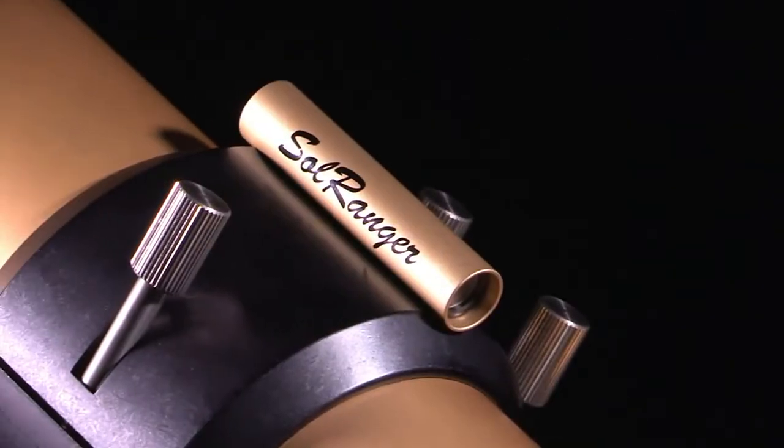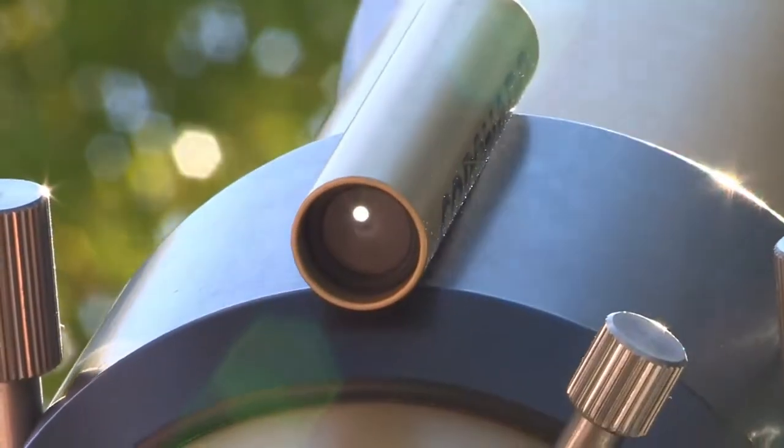The SolarMax II has the included Coronado Soul Range Sun Finder, making sunspotting safe and easy.